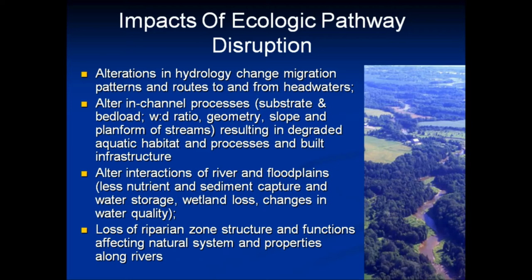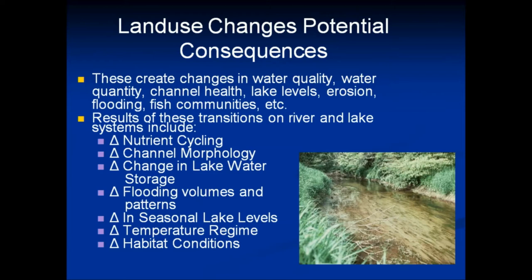All these interactions occur over time, and you need to understand for your area how they interact — because each area is a little bit different. Land use modifies all of this. Changes in the water budget produce changes in when the water is delivered, how quickly it's delivered, the quality of that water, the amount of sediment and nutrients it carries. All these result in changes in nutrient cycling, channel morphology, lake water storage, flood volumes and patterns, seasonal lake levels, temperature regime, and habitat conditions. Ecology is not rocket science — it tends to be a bit more complicated than that.